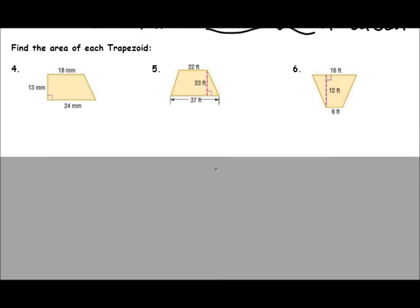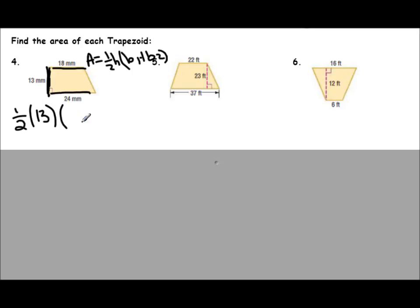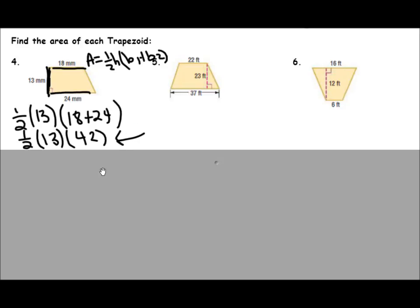Number 4: find the area for each trapezoid. The area formula for a trapezoid is 1/2 × height × (base 1 + base 2). We need the height and each base. The height is always the perpendicular measure. So it's 1/2 × 13 × (18 + 24). We add 18 and 24 first to get 42: 0.5 × 13 × 42 gives you 273 millimeters squared because we're talking about area.